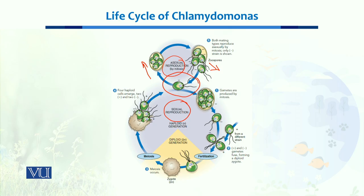During sexual reproduction, two different types of gametes are involved — one is called a negative gamete and the other a positive gamete. These two gametes combine and fuse with each other to form a zygote through the process of fertilization.